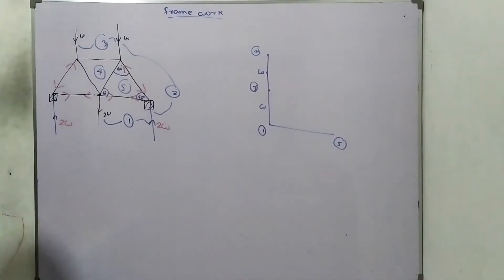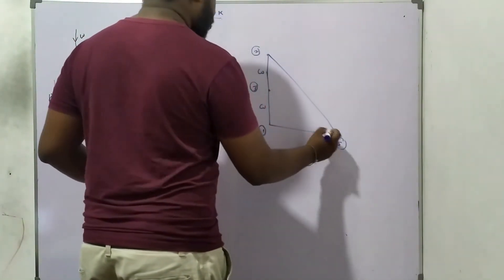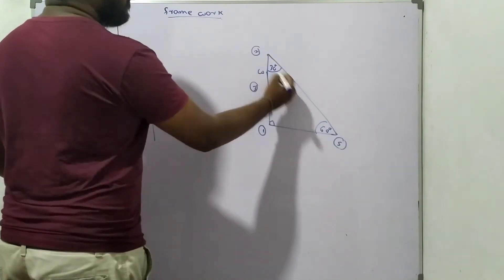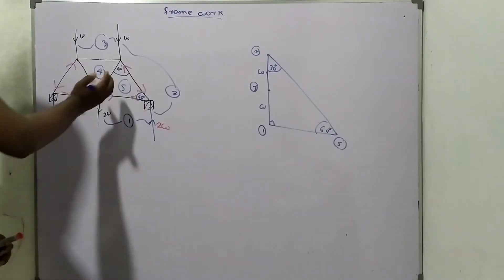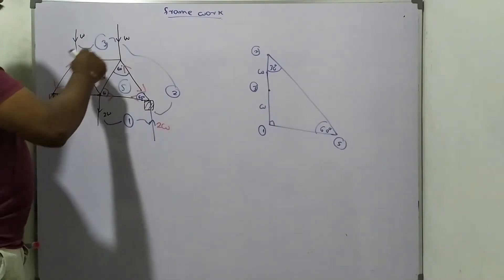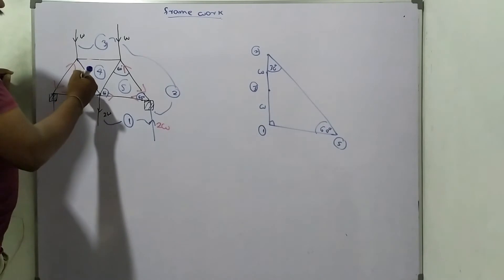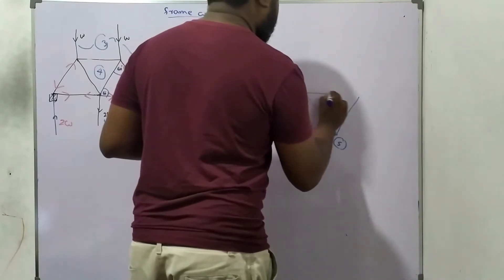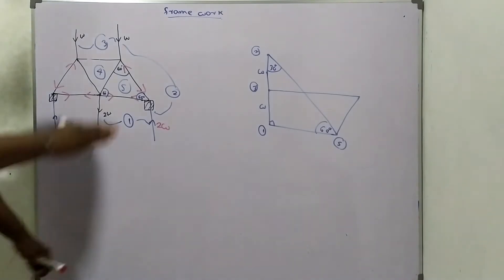One to five goes horizontally. One to five and two to five go this way. One to three, and we have to put only four-five at some angle. Four-five at some angle, and four-three should be one line. Five-four should go this way.